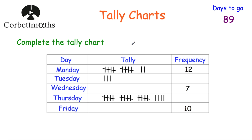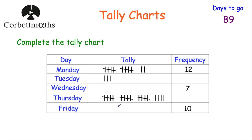Tally charts are particularly useful whenever we're counting things. When we've got 1, 2, 3, 4 — when we get to 5 we put a line across, so that's 5. Some people do it diagonally, doing a diagonal line for the fifth. It's really up to you, but it's 1, 2, 3, 4 and then a line going across, and then you carry on. That's how you count using tally charts.